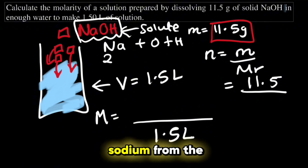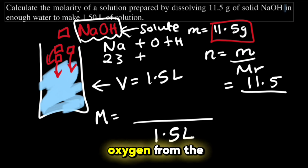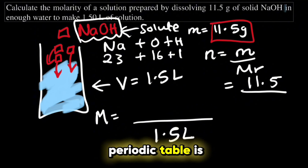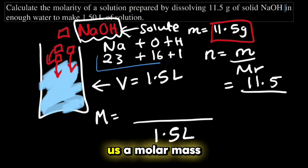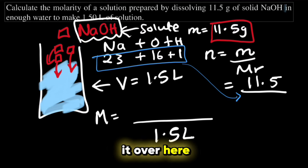The mass of sodium from the periodic table is 23, plus the mass of oxygen from the periodic table is 16, plus the mass of hydrogen from the periodic table is 1. This will give us a molar mass of 40. So we will write it over here, 40.